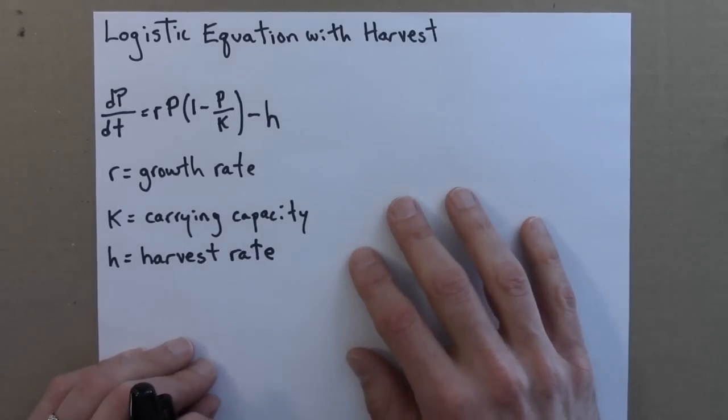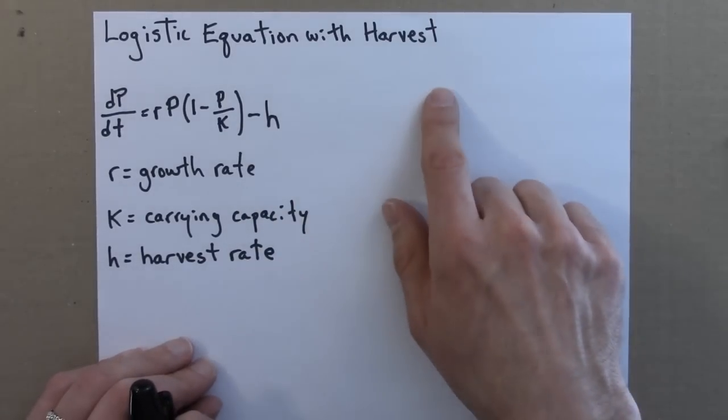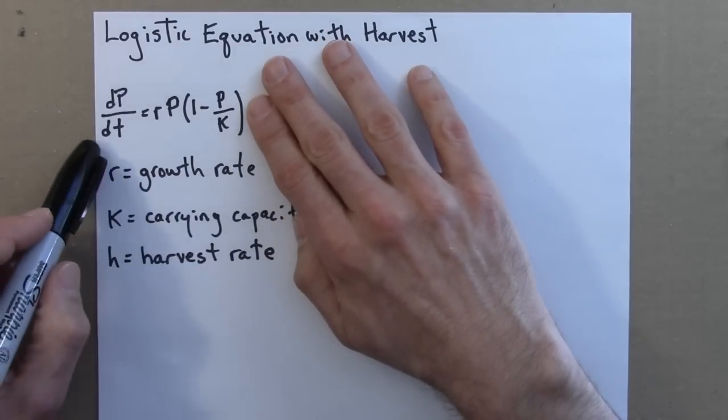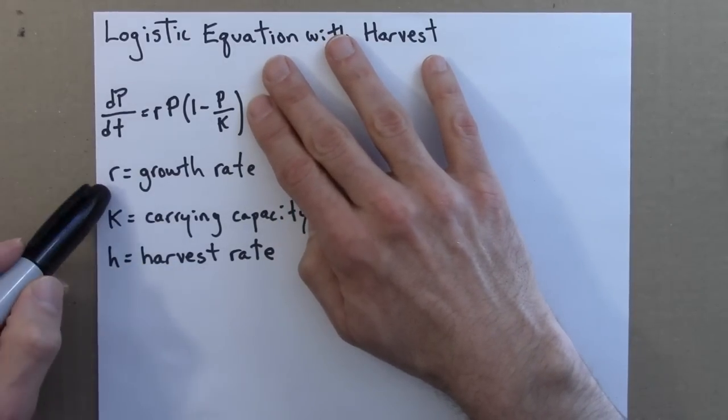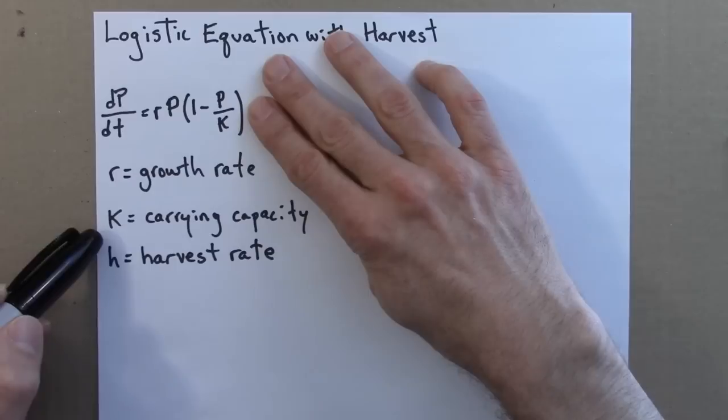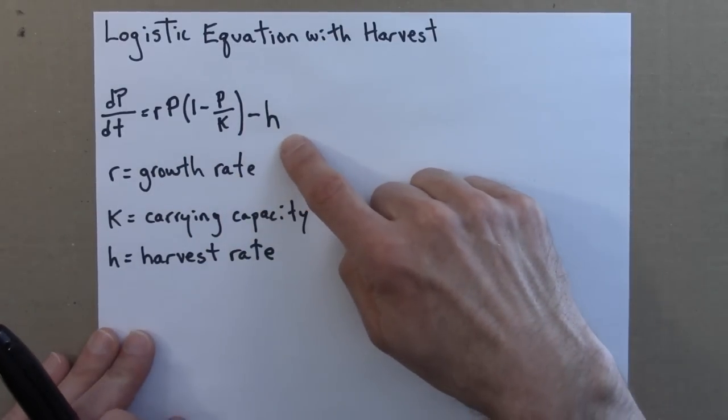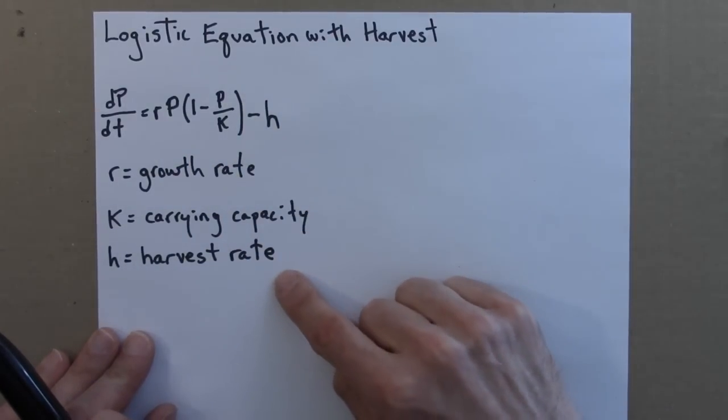So here is the logistic equation with Harvest. Without this h term, this is the regular logistic equation. R is the growth rate, and k is the carrying capacity. And I'm going to add another parameter, h, which we can interpret as the harvest rate.